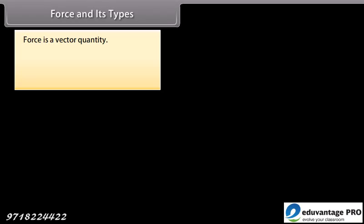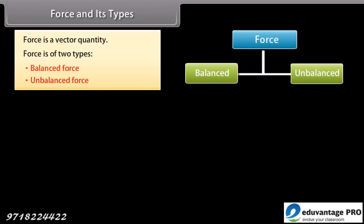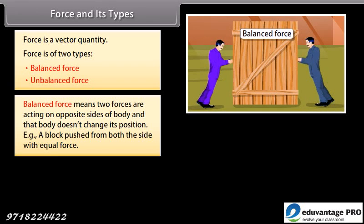Force is a vector quantity. Force is of two types: balanced and unbalanced. Balanced force means two forces are acting on opposite sides of the body and that body does not change its position. Example: a block pushed from both sides with equal force.